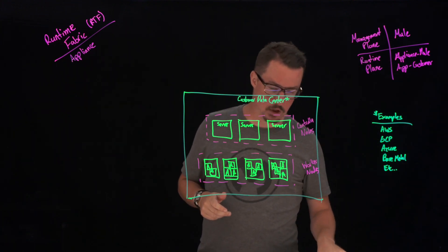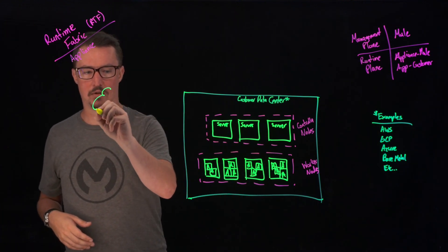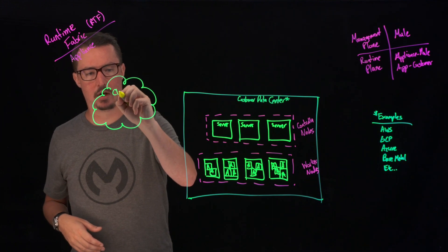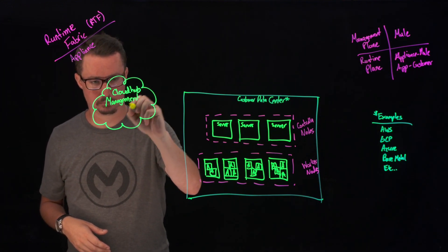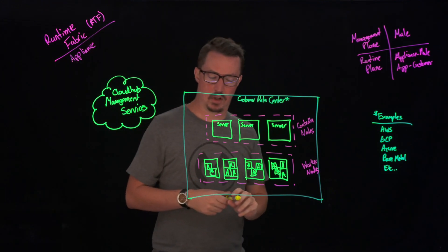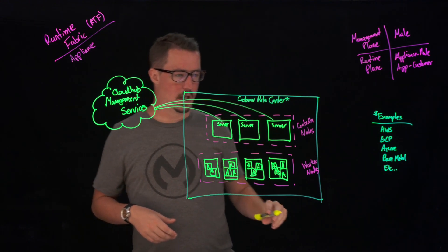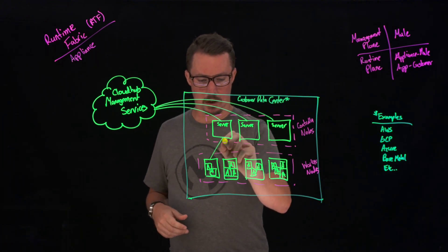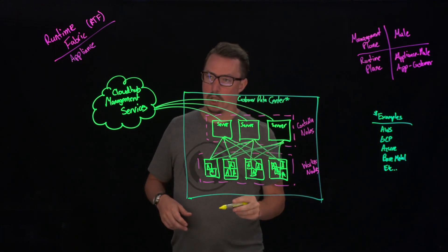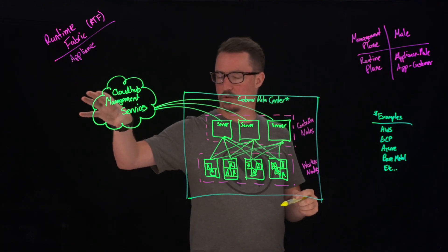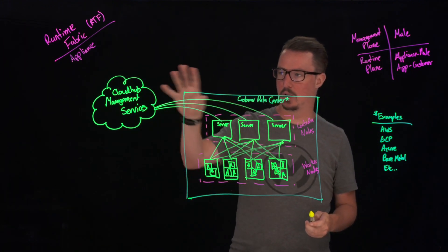The next question is how do we actually go and manage this? We've got everything running on-premise, but we need to make sure we can connect up to our management plane. This is where we're going to have our CloudHub management services. Essentially, this is going to be connecting up to our controller nodes, and in turn each one of these controller nodes is going to be able to manage all of our individual worker nodes. So you're going to be able to manage all of the applications deployed via our CloudHub management services.